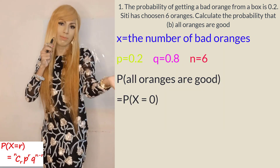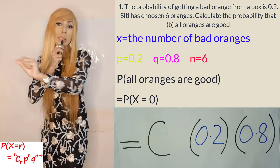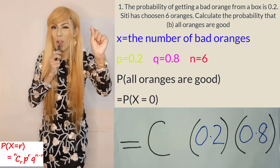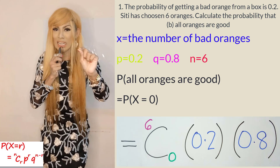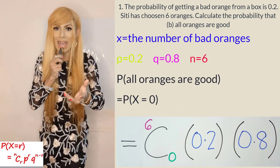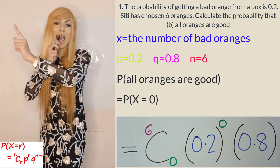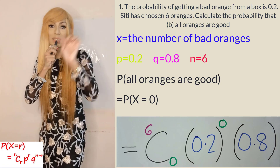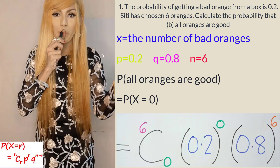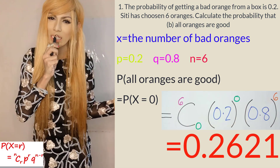This equals C( )( ) where the first bracket is 0.2 and the second bracket is 0.8. It's 6C0 because zero oranges are bad. So 0.2 to the power of 0, and 0.8 to the power of 6 minus 0 = 6. Key that into your calculator and you will get 0.2621.